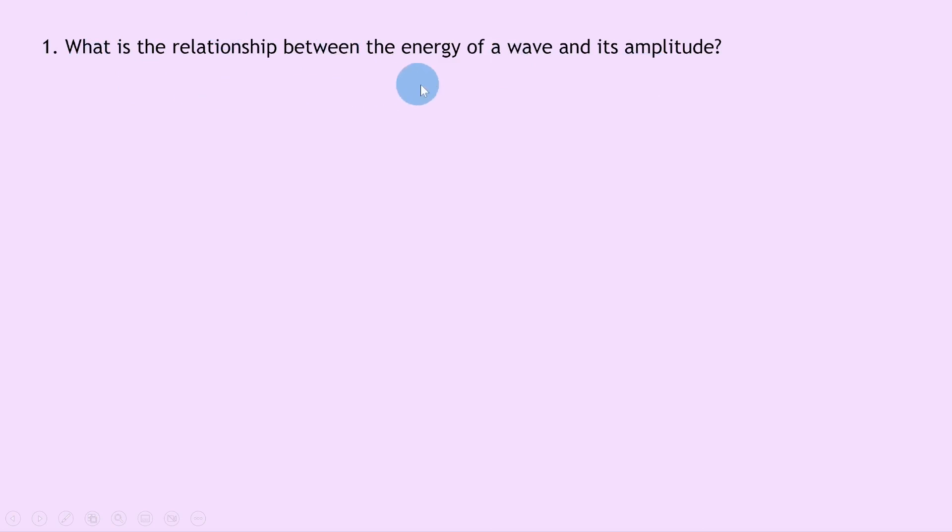So let's get going. Question one says: what is the relationship between the energy of a wave and its amplitude? Well, from the notes we can say the energy transferred by a wave is directly proportional to the square of its amplitude. That is, we can say that E is proportional to A squared.